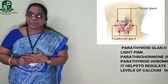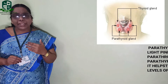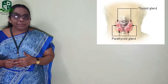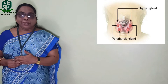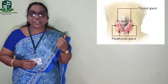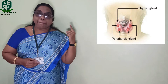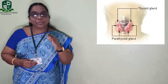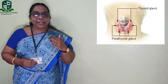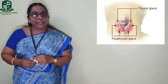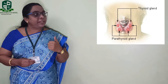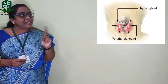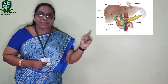The main function of this parathyroid hormone is that it maintains the levels of calcium in the blood as well as in the bone. So to summarize the parathyroid gland: its location is the back side of the thyroid gland near the neck region, there are two pairs making four glands, their color is light pink, and the hormone secreted is parathyroid hormone.